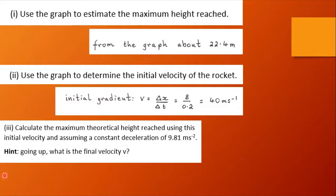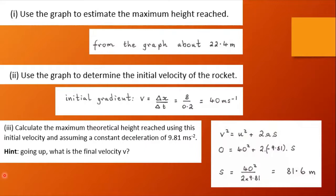So my hint is again going up and reaching its maximum height, what's the final velocity? Well v squared equals u squared plus 2as. Final vertical velocity is zero, we know the initial vertical velocity, and a calculation gives us a massive 81.6 meters, which is quite surprising.